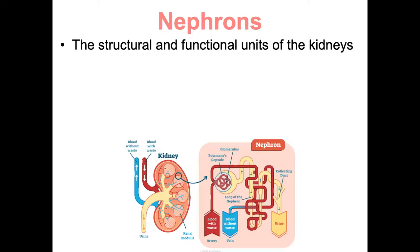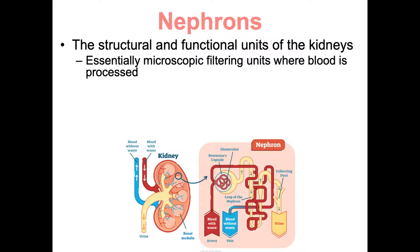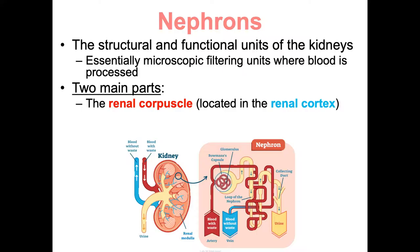Now we have to talk about nephrons — the structural and functional units of the kidney. They're essentially microscopic filtering units where blood gets processed, the smallest physical structure capable of carrying out the kidney's function. If you know how a nephron works, you know how the entire kidney works. Each kidney has about one million of these working together to make your urine.